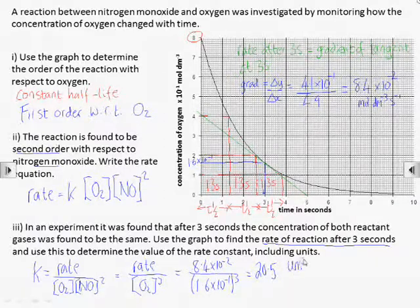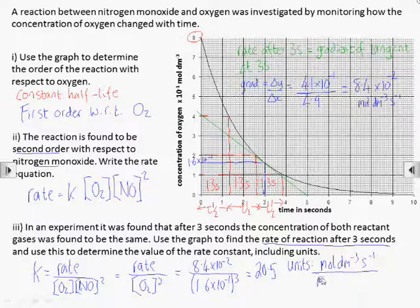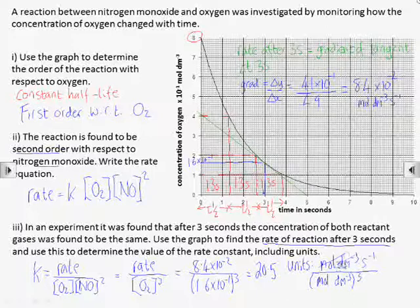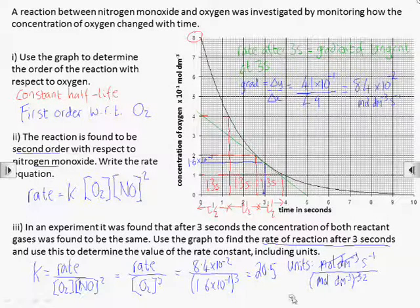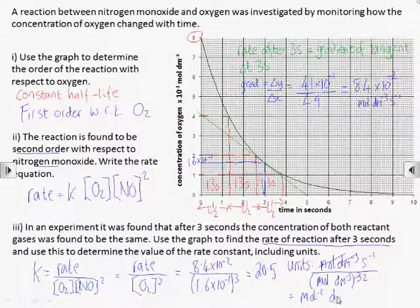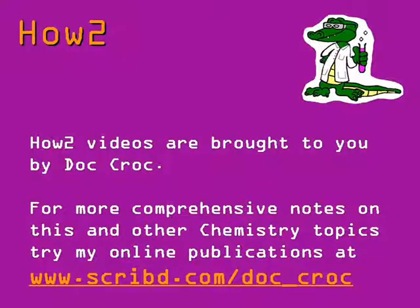The units of the rate constant are found by dividing the units of rate, moles per dm cubed per second, by the units of concentration times concentration squared. We could cancel moles, and per dm cubed on the top and bottom, leaving us with units of moles to the minus 2, dm to the 6, seconds to the minus 1.